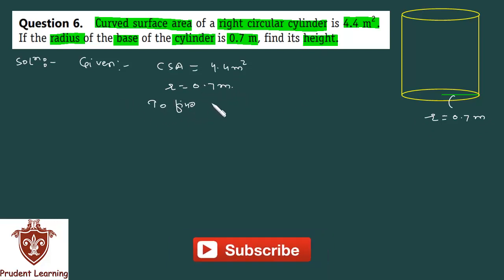To find height H. We know that curved surface area of a right circular cylinder is given by 2πRH. CSA value is available. We can write 2πRH is equal to 4.4.